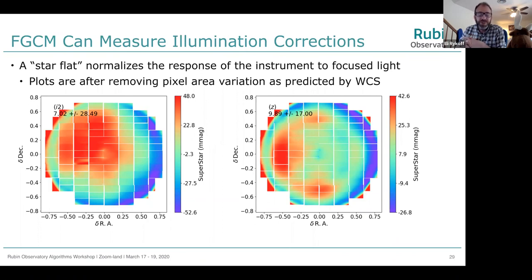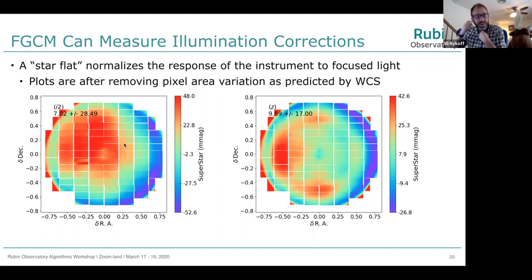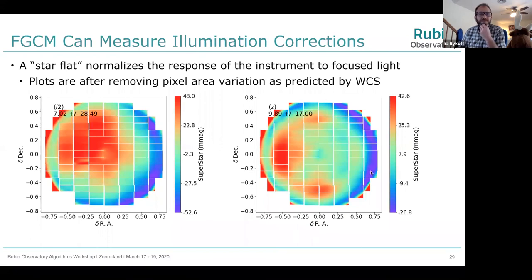Something Gary also talked about was FGCM measurement of star flats — the normalization of the response of the instrument to focused light relative to what the dome flat says. In DES, we did star flats based on dithered dense star field observations. For HSC these can be generated from plenty of dithered wide-field observations. Here's what it looks like for the I2 and Z bands — this is in millimags — it's actually about 4.8% and 5.2% negative, so even after accounting for pixel area variation, there's roughly a 10% star flat term in the I and Z bands.